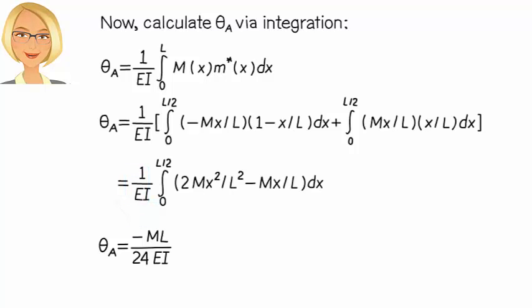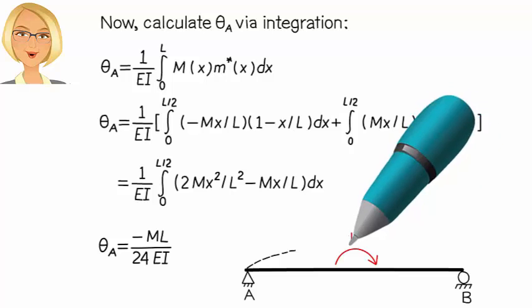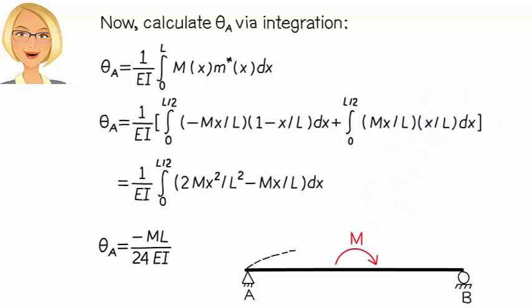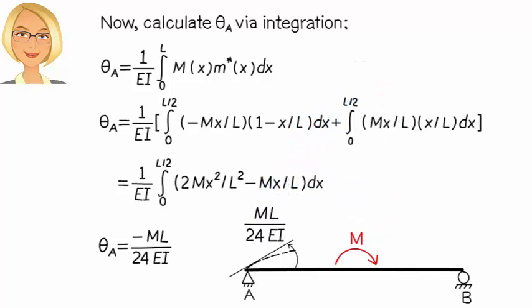It means the actual direction of theta A is opposite to the assumed one. Joint A rotates in the counterclockwise direction in response to the applied load. It is also important to note that the unit of rotation is radians, not degrees. So, joint A rotates by ML over 24 EI radians in the counterclockwise direction when a clockwise concentrated moment M is placed at mid-span.